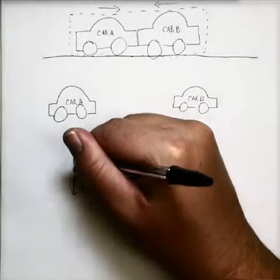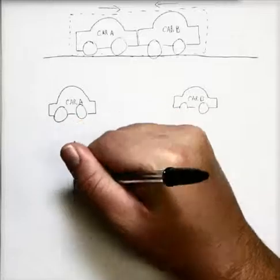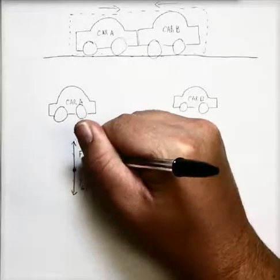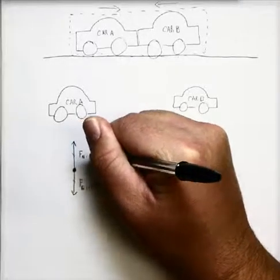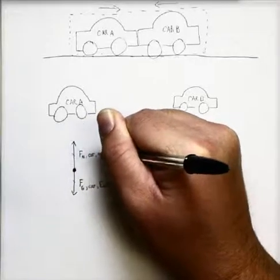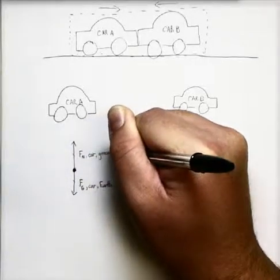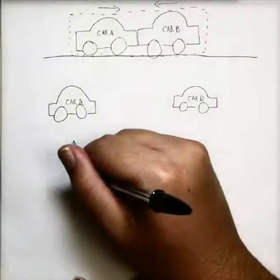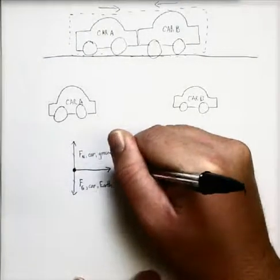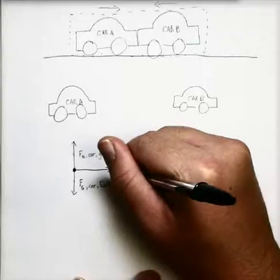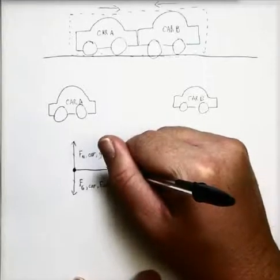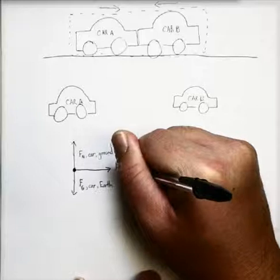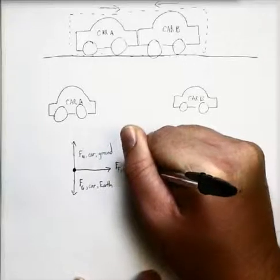We also have upward and equal in size to that, the normal force on the car from the ground. And now things can get a little interesting. We have a thrust force that was causing the car to go forward.